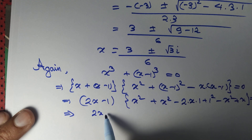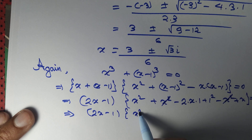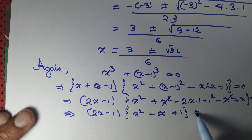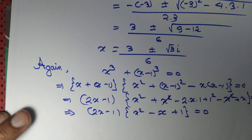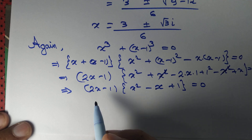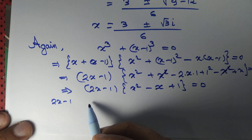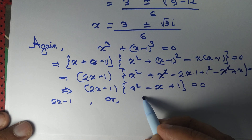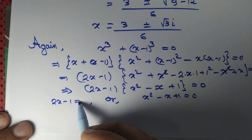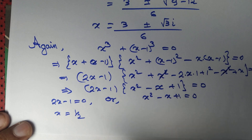So 2x minus 1, whole thing, into x squared minus x plus 1, equal to 0. Now once again, if the product of two numbers equals 0, then one of them has to be 0. So either 2x minus 1 equal to 0, or x squared minus x plus 1 equal to 0. If 2x minus 1 equal to 0, that gives us x equal to half — take 1 to the right hand side and divide by 2.